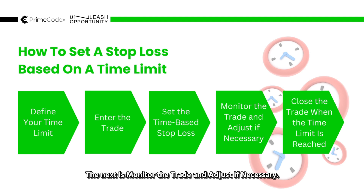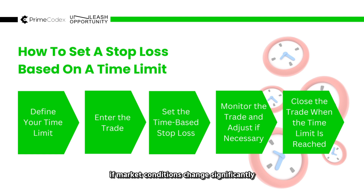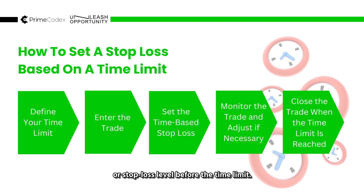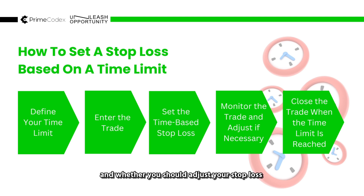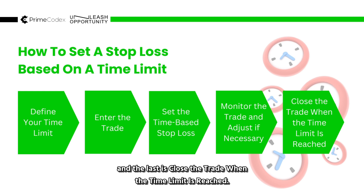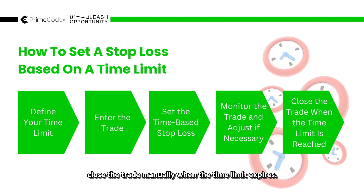Monitor the trade and adjust if necessary. Throughout the trade, monitor its progress and be prepared to take action if market conditions change significantly, or if your trade reaches your profit targets or stop loss level before the time limit. If the trade is moving against you but does not reach your time-based stop loss, consider whether market conditions still align with your initial trade thesis and whether you should adjust your stop loss or exit the trade earlier. Close the trade manually when the time limit is reached if it has not hit its stop loss or profit target.